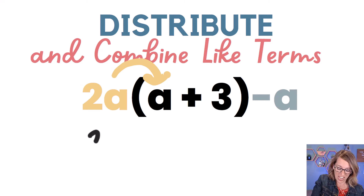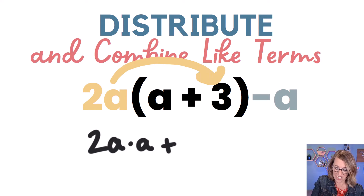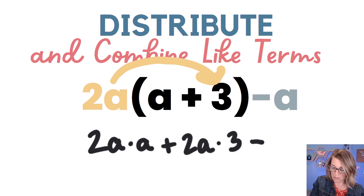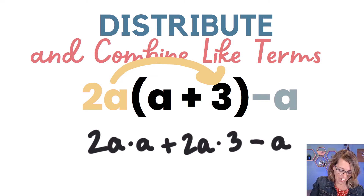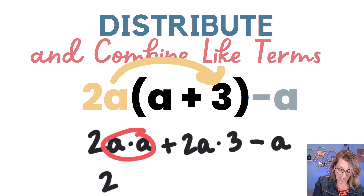Starting with two a times a, and then I'm going to distribute it onto that plus three. So I'm going to write my plus sign and then two a times three. And I still have that minus a on the end. As I'm simplifying, I want to multiply the like values together. So I've got an a times an a — that's going to become an a squared. So I've got two a squared.